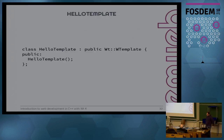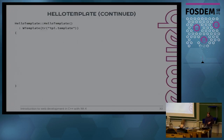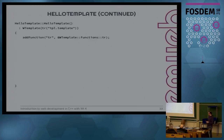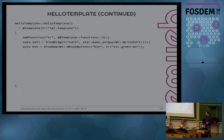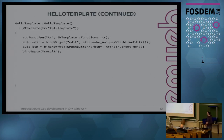Let's define our template widget. We inherit from WTemplate and initialize it with our string using the tr() function to retrieve tpl.templates, then register that tr() function. Then we create a new WLineEdit and bind it to the edit variable using bindWidget(). We also have a shorter form, bindNew(), so we bind a new WPushButton to the btn variable. Every subsequent argument is passed into the constructor of WPushButton, and we use the tr() function to get the 'greet me' message. We'll leave the results empty for now.